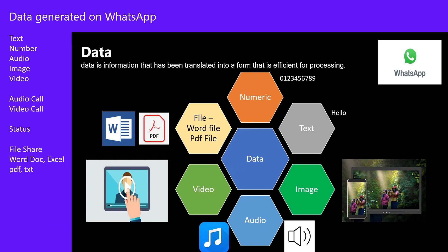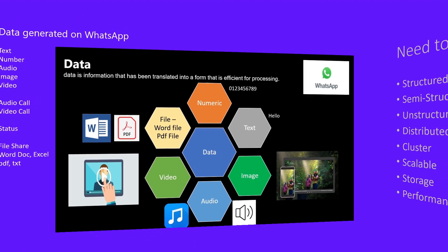Data generated in WhatsApp comes in multiple formats: numeric data, text data, image, audio, video, PDF files, and Word files. You can also make audio calls and video calls, and there is a status feature available for 24 hours. So we have different types of media, which is both structured and unstructured data.